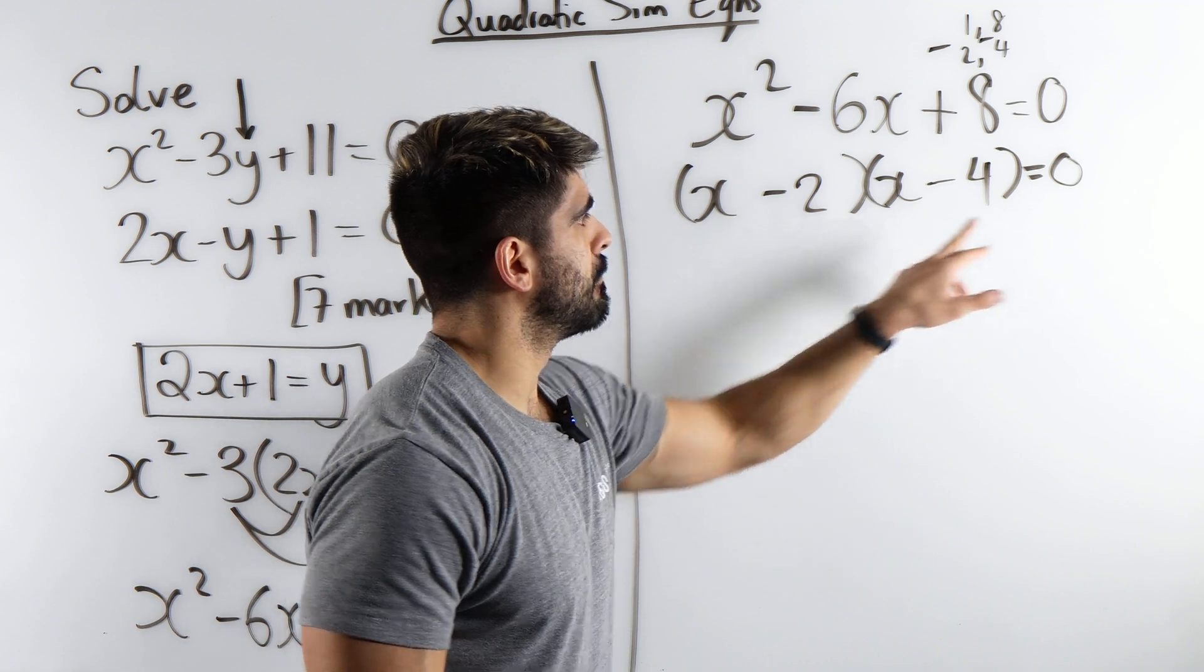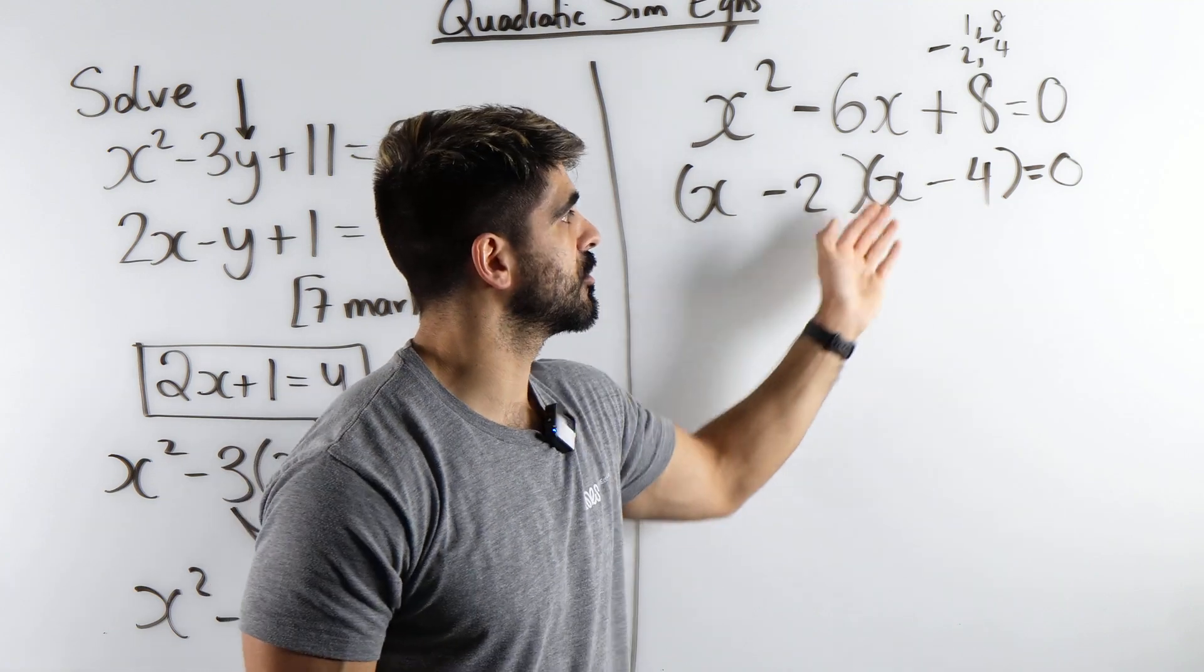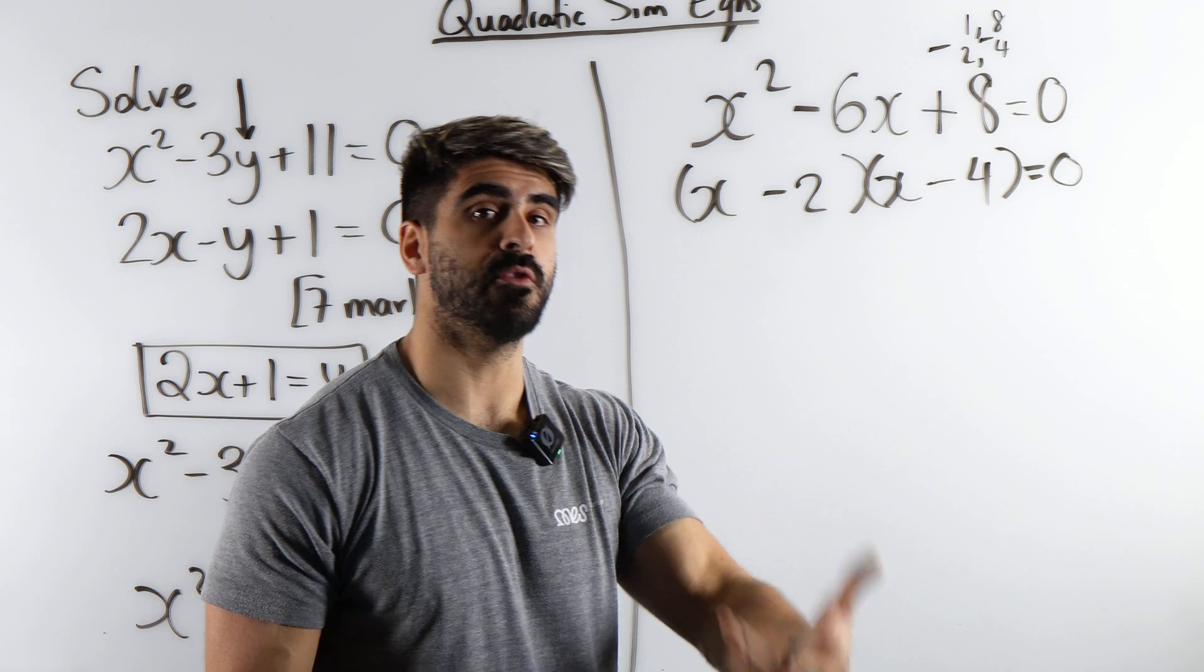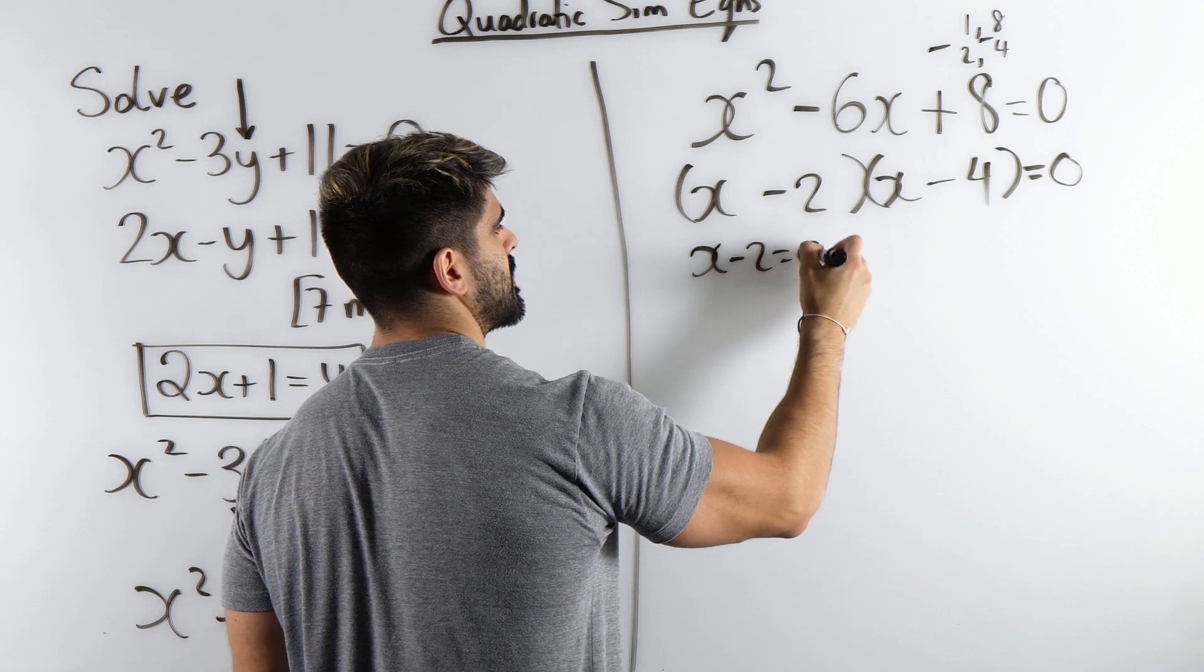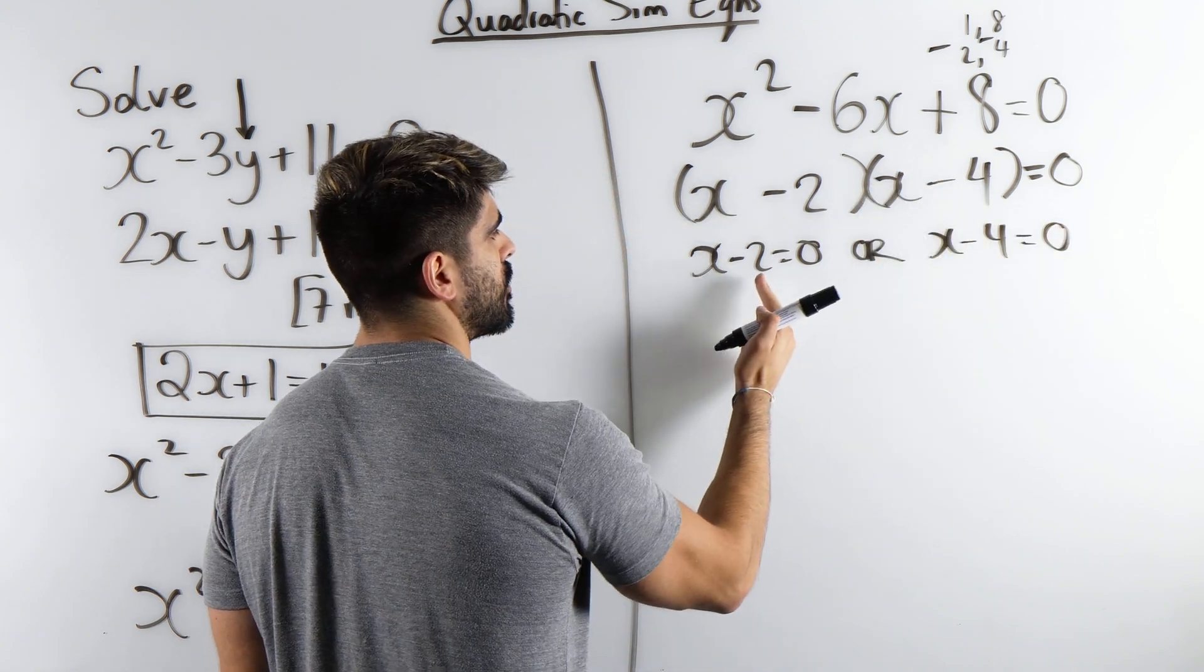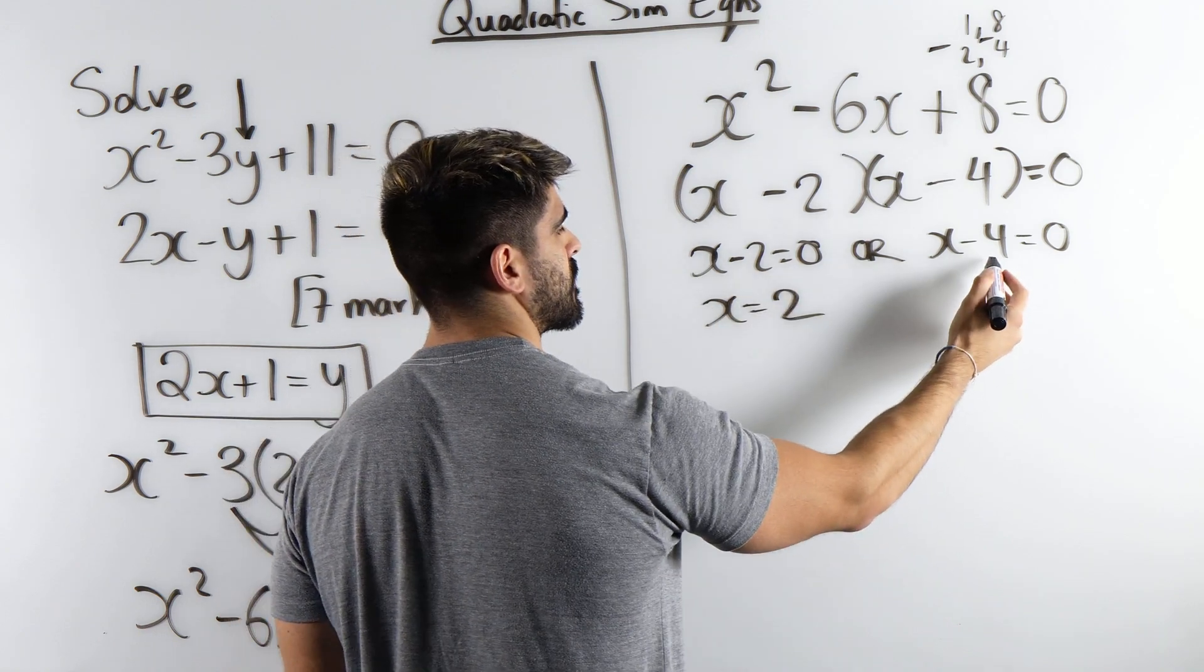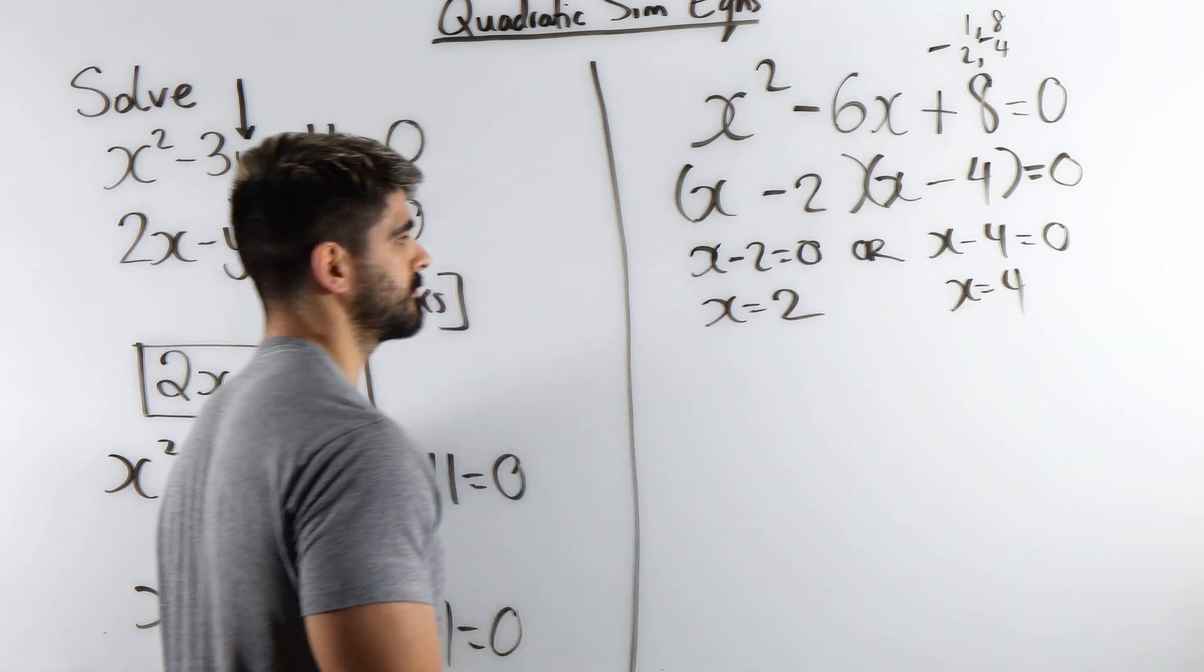Now we have two brackets that multiply to give you 0. So one of them has to be 0. 0 times something is 0. 0 times 0 is also 0. So they both could be 0 as well. So we're going to say x minus 2 equals 0, or, so it's an or statement not an and statement, x minus 4 equals 0. A minus 2 on the left is a positive 2 on the right. Minus 4 on the left, positive 4 on the right.